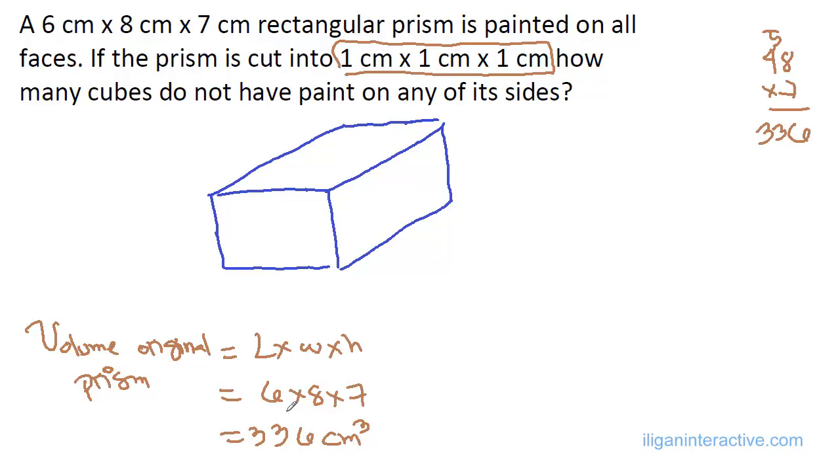The question is asking how many of these cubes don't have any paint on their sides. Well, to solve this problem, because all of these outer surfaces already have paint on them, we can draw a smaller version of our prism.